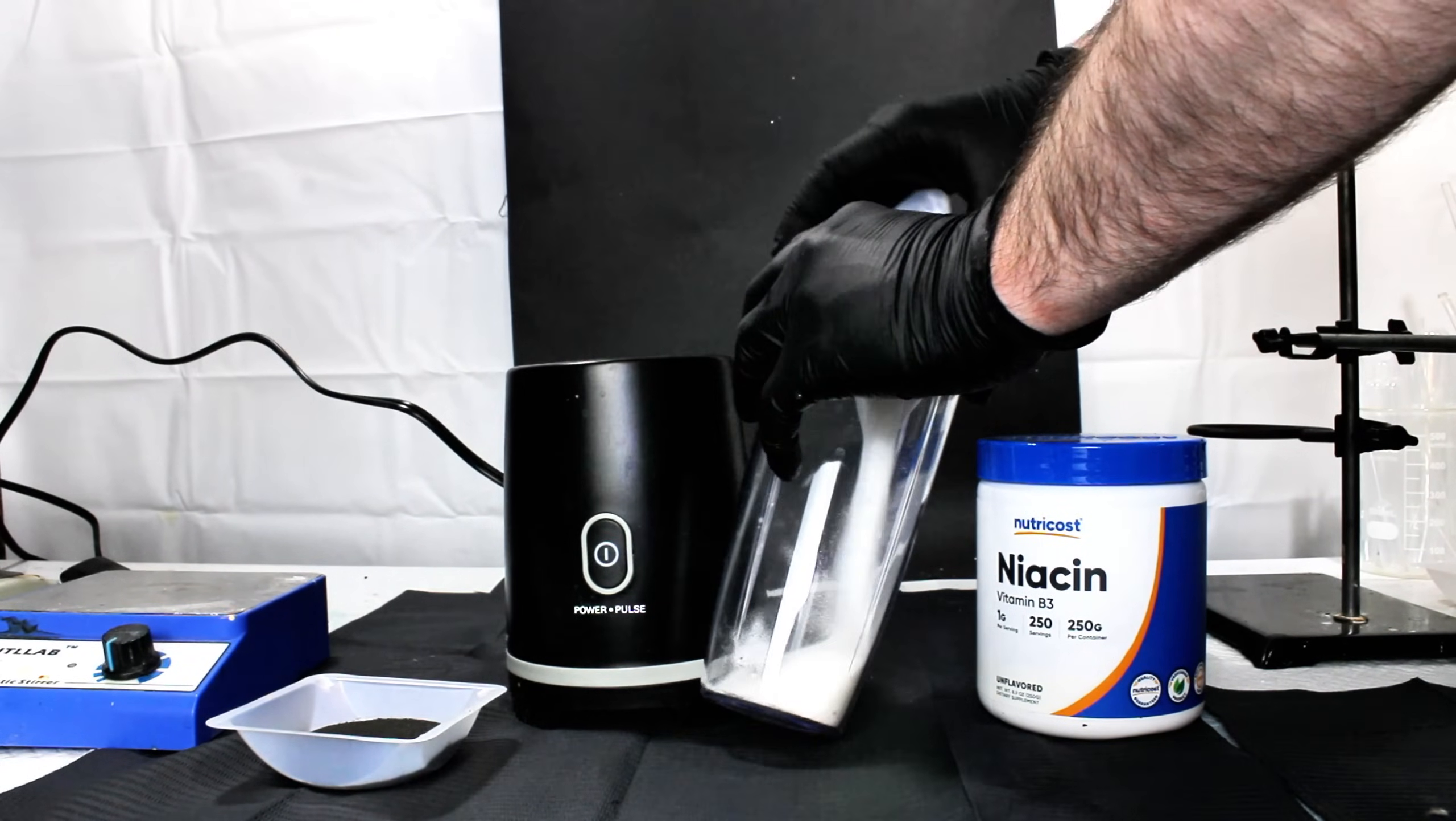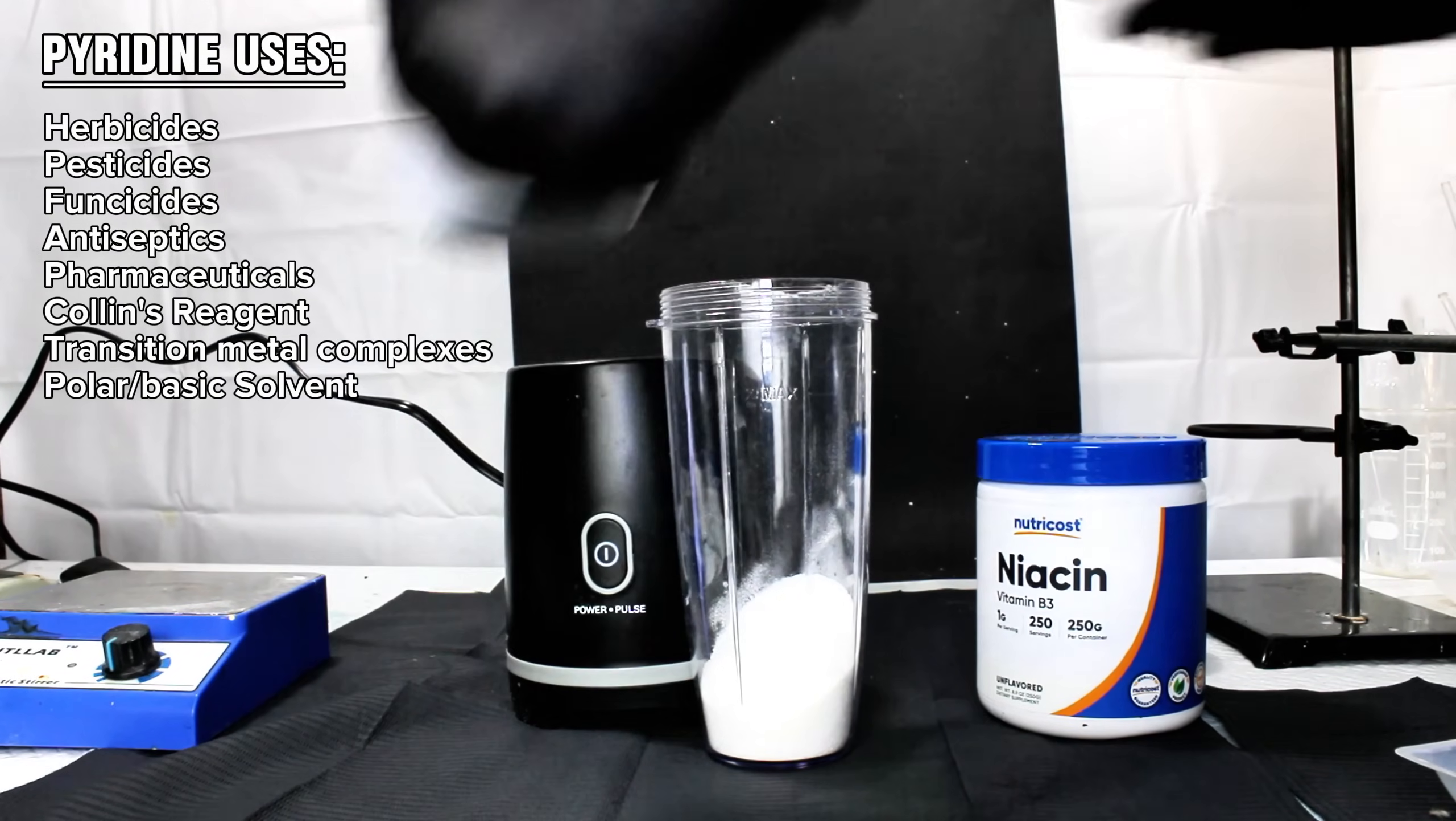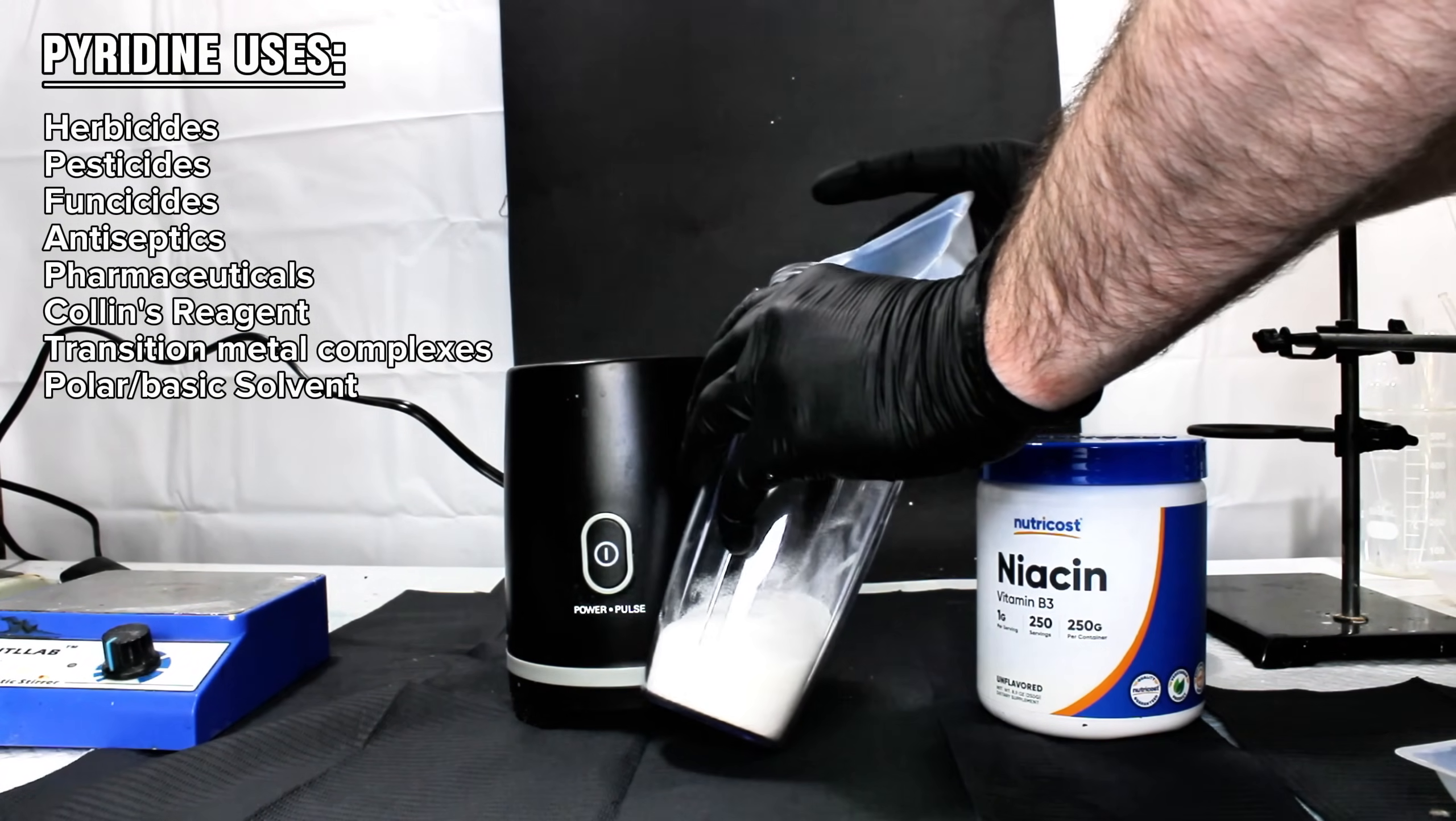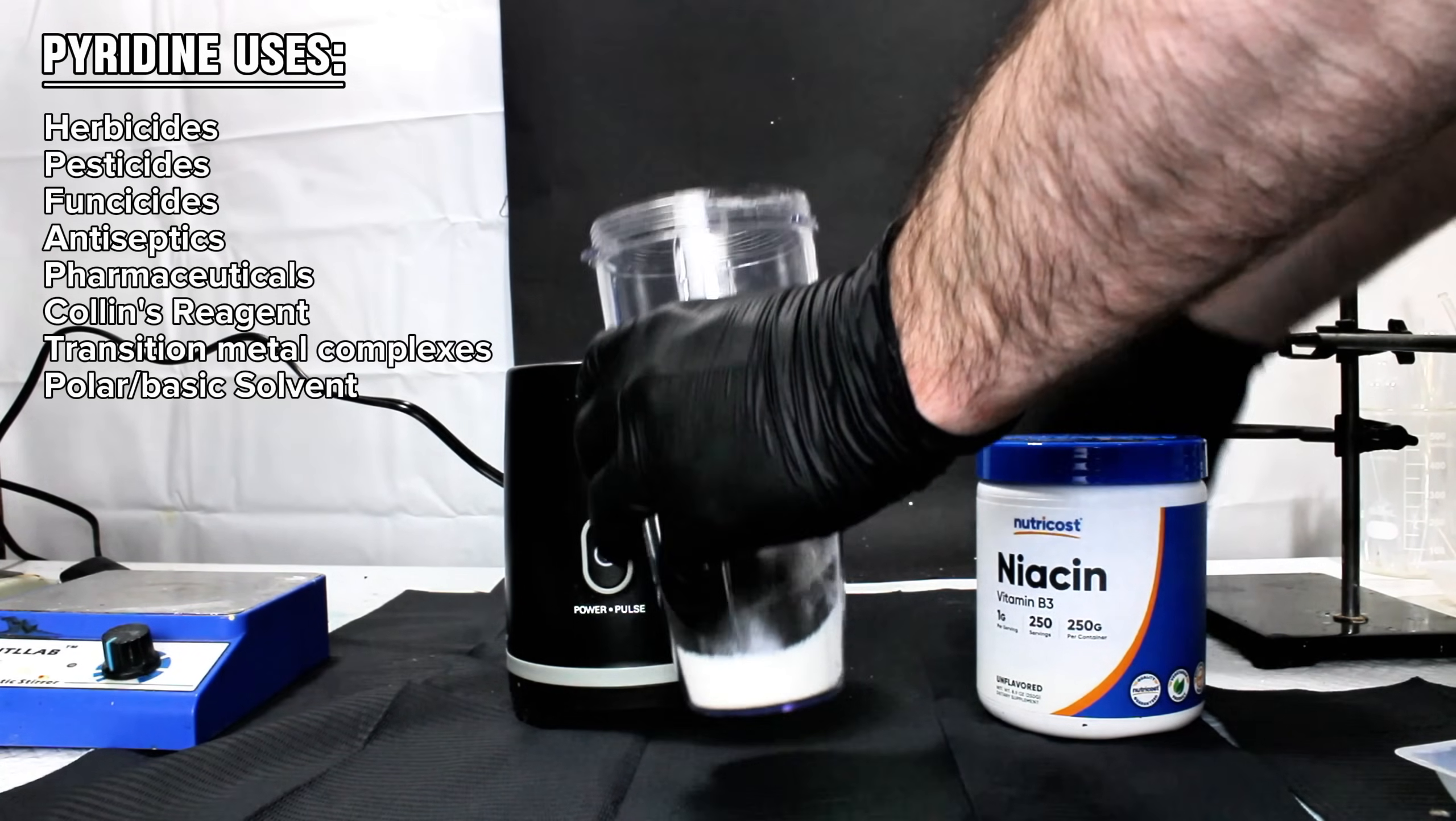In the chemistry lab, pyridine is used to synthesize a variety of pesticides and pharmaceuticals. For those who can tolerate its foul odor, it can also be used as a polar, basic, and minimally reactive solvent.